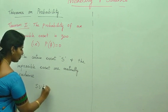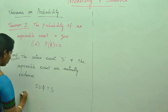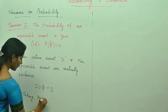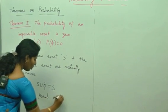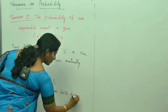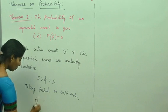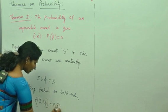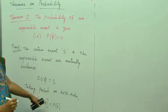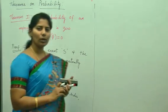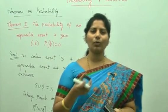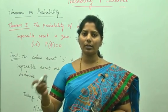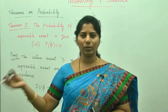From this we can write S union phi equals S. Now, taking probability on both sides, we get P(S ∪ φ) = P(S). Now, from Axiom 3: if A1, A2, ... AN are a finite number of disjoint events, then P(A1 ∪ A2 ∪ ... ∪ AN) = P(A1) + P(A2) + ... + P(AN).